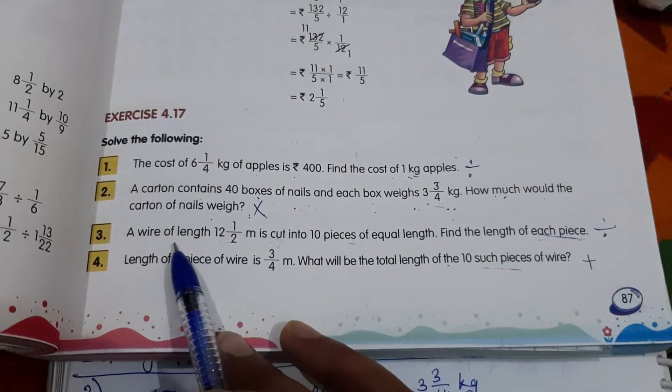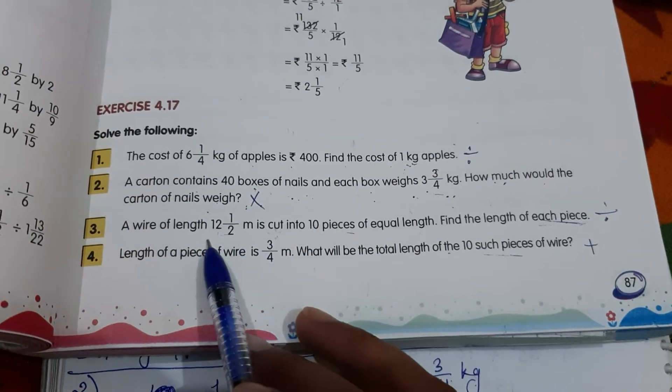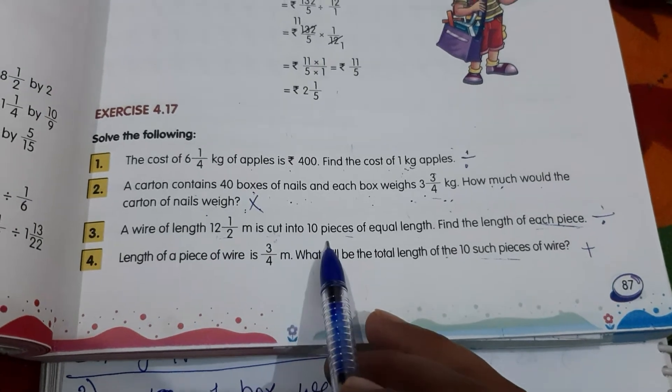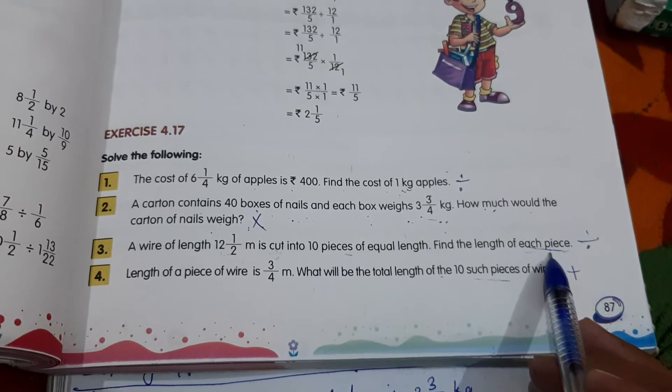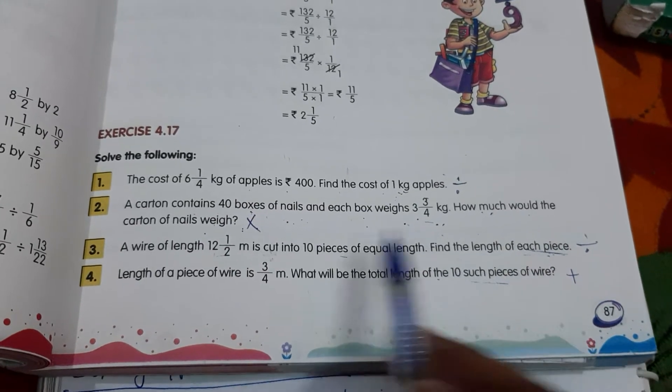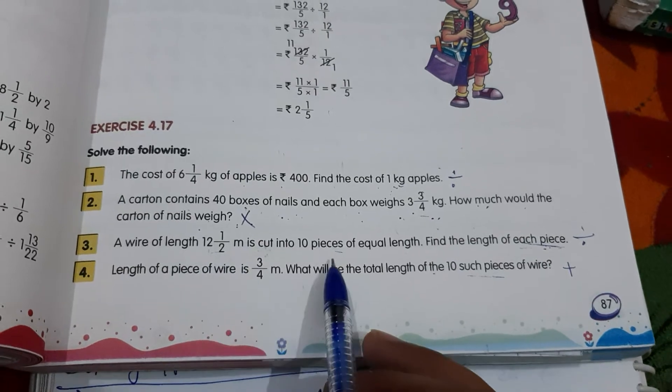Now question number 3. A wire of length 12 1 by 2 m is cut into 10 pieces of equal length. Find the length of each piece. Each piece, so you know what we have to do - divide. So what is the bigger one? This one is bigger. So ismeh iska divide lagayenge.